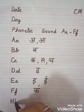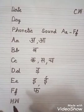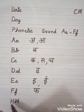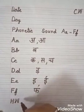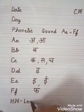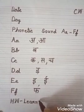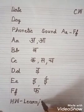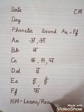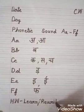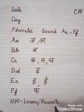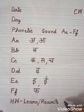Now, last line — write down H.W. H stands for 'home', W stands for 'work' — it's homework. Write down: Learn — L, E, A, R, N. Slash. Then write Rewrite — R, E, W, R, I, T, E. Learn and rewrite. Then leave some space.